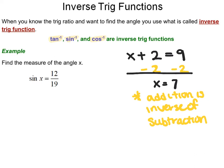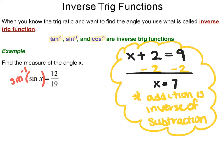If we use this as our example, if I have sine of x equals 12 over 19, you would take the inverse sine of both sides. When I take the inverse sine, it becomes x equals inverse sine of 12 over 19.